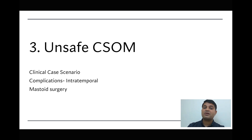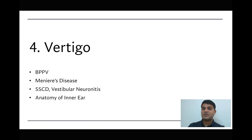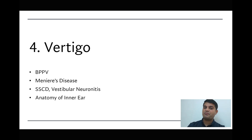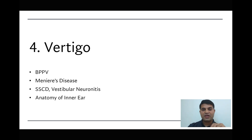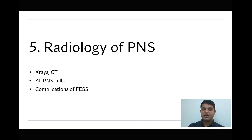The fourth important topic is vertigo. If you look at the last five to ten years of questions, every year there is one question on vertigo. The two most important disorders are benign paroxysmal positional vertigo and Meniere's disease, and also smaller topics like superior semicircular canal dehiscence and vestibular neuronitis. You must also know the orientation of the labyrinth — where the semicircular canals and cochlea are located.